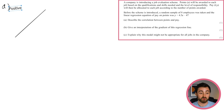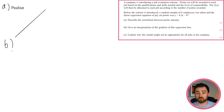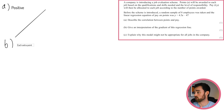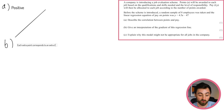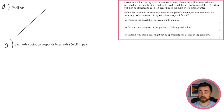Part b says give an interpretation of the gradient of this regression line. Every time x goes up by one, y goes up by 4.5. So for each extra point awarded, your pay goes up by 4.5 — or £4.50. That makes sense. Part c is just words — explain why this model might not be appropriate for all jobs in the company.